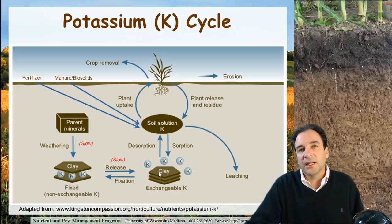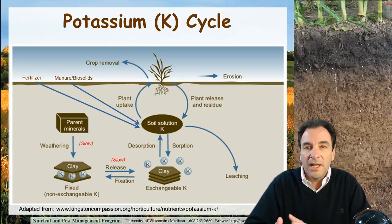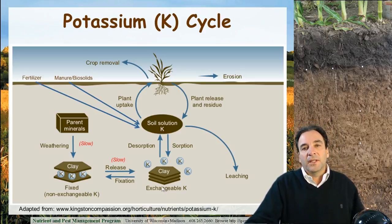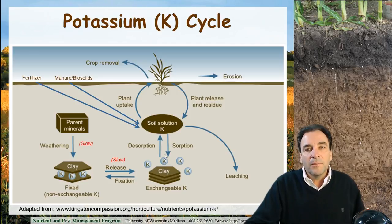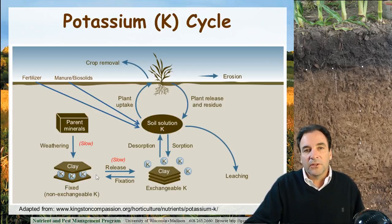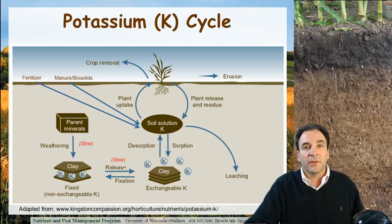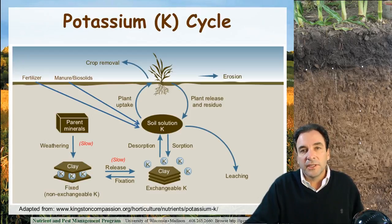Think about cation exchange capacity — the ability of soil particles and organic matter particles to hold on to cations. There's an equilibrium between plant-available dissolved potassium in the soil solution and the exchangeable potassium held on the exchange sites of clay minerals and other soil particles. This equilibrium also extends to the fixed or unavailable or very slowly available potassium from the soil itself. The release of potassium from parent material to fixed clays to available clays is very slow, and we can't rely on that to supply potassium at levels to meet the agronomic needs of our crops.